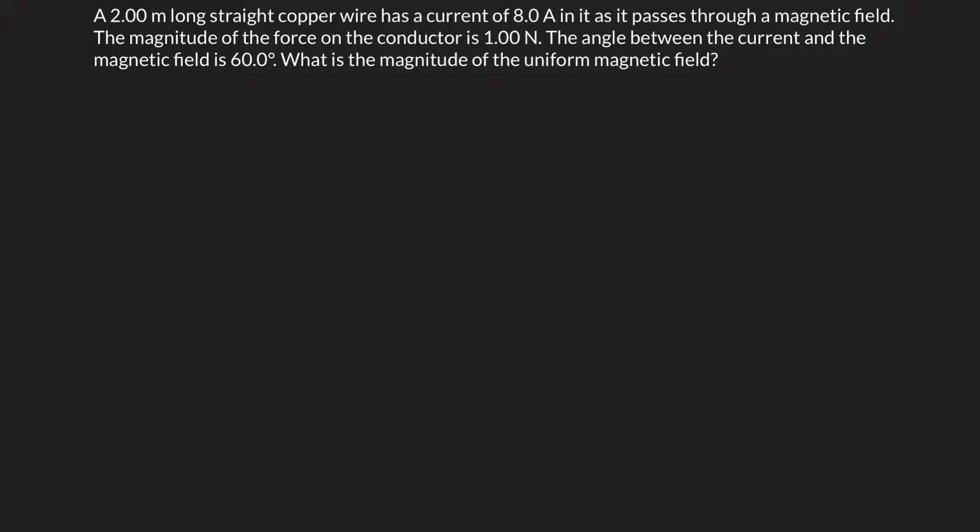So we have the force, we have the length, the current, and of course we have an angle. So we know F, that is equal to 1.00 newtons, we have I, 8.0 amps, we have L, 2.00 meters, and we have some angle theta, 60.0 degrees.